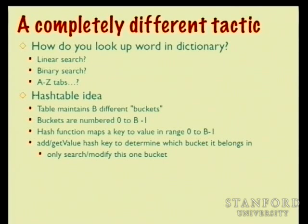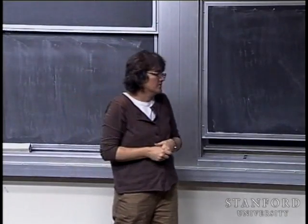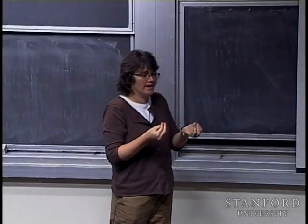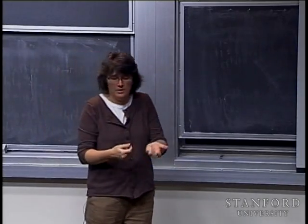The idea is to have criteria that divide keys into non-overlapping buckets so everybody has a unique bucket. If I make enough categorizations — enough buckets — I can keep the set in each bucket very small. For example, dividing by the first letter of a last name gives 26 buckets. In a class of 200 students, if evenly distributed, there'd be about four people per bucket, making it fast to find anyone.